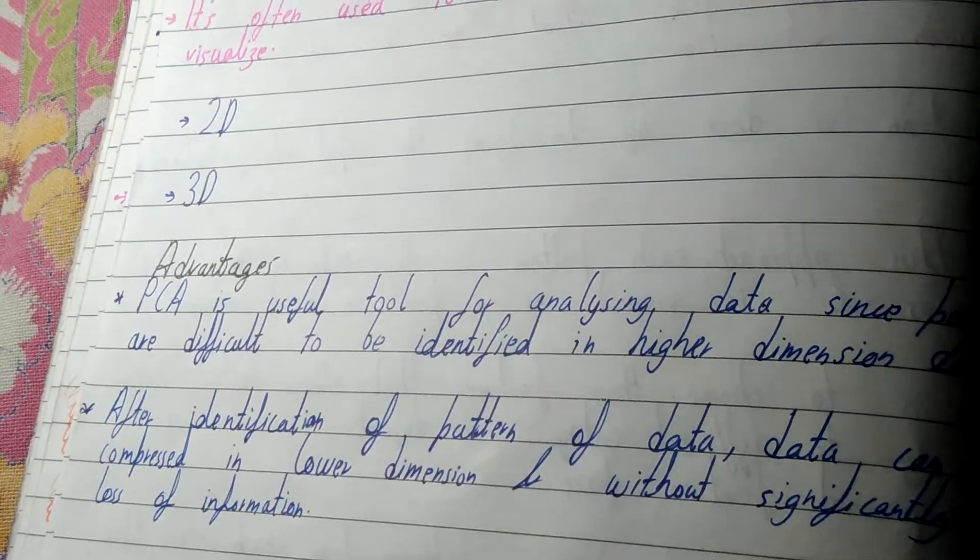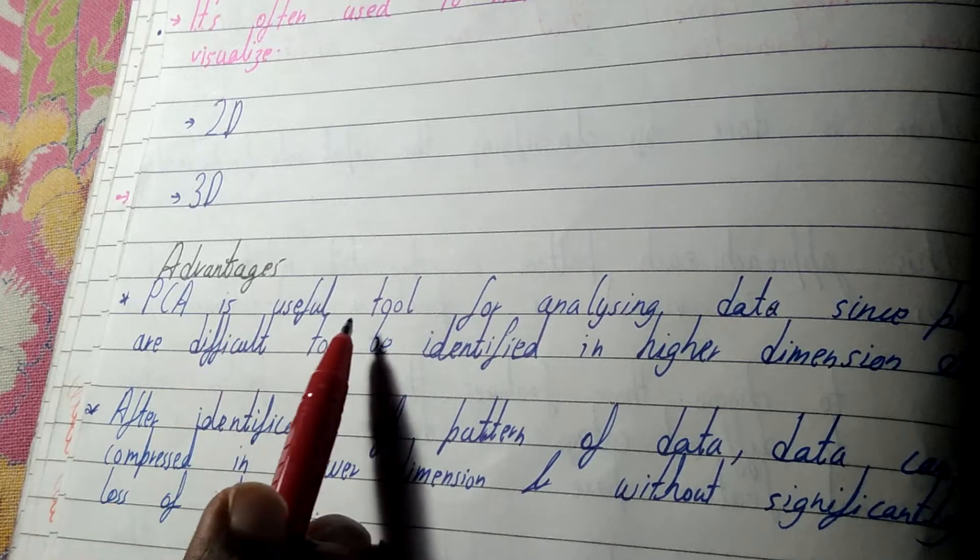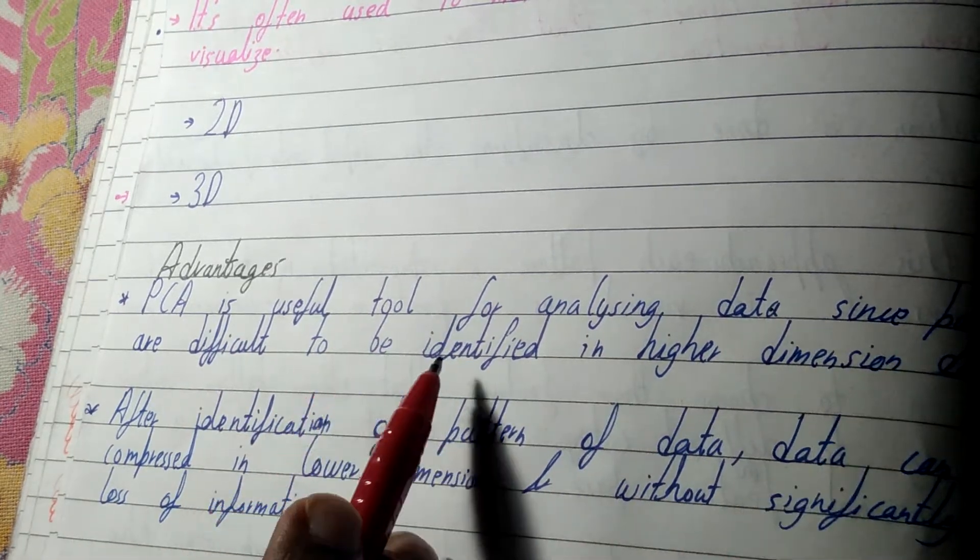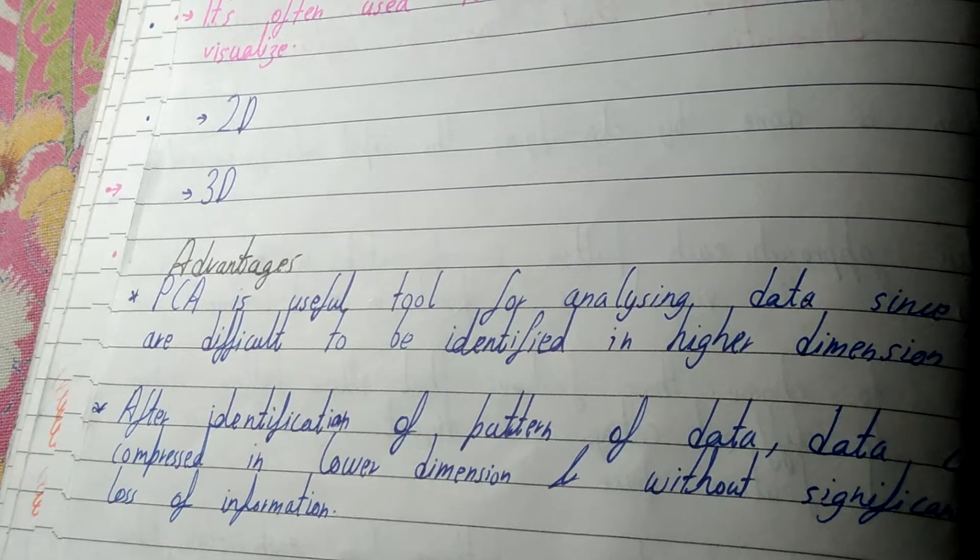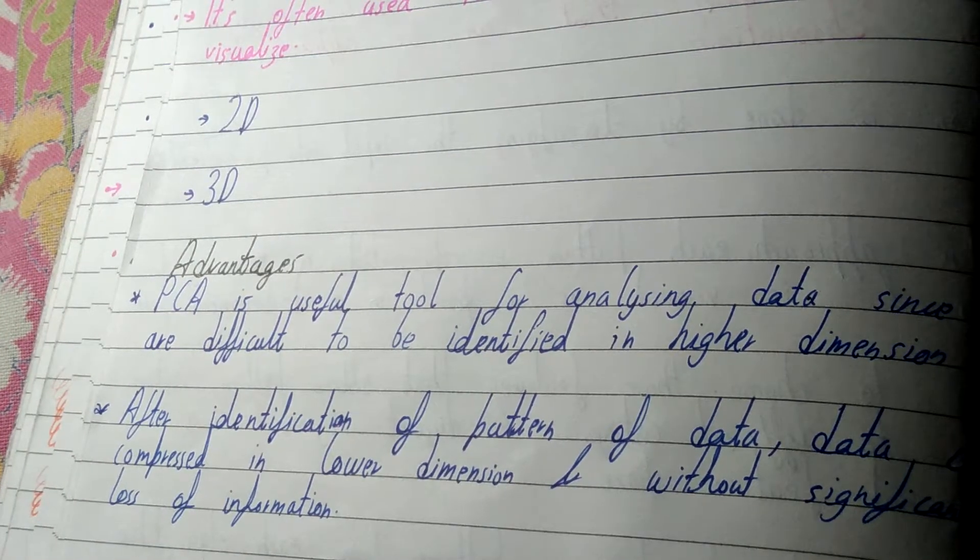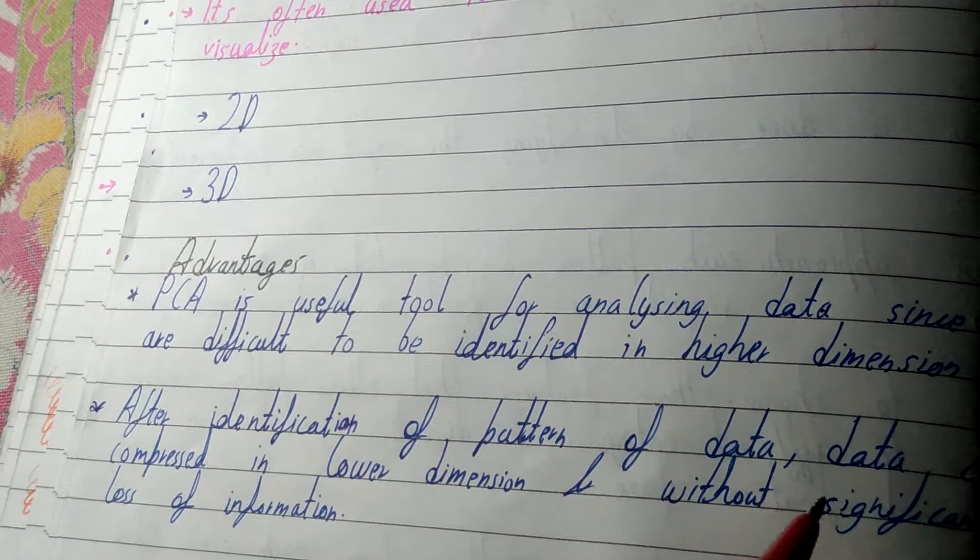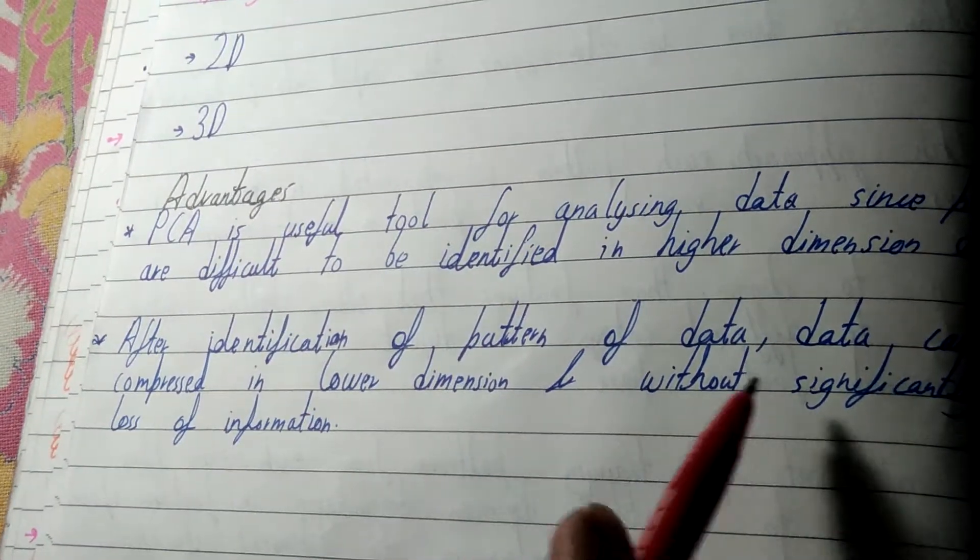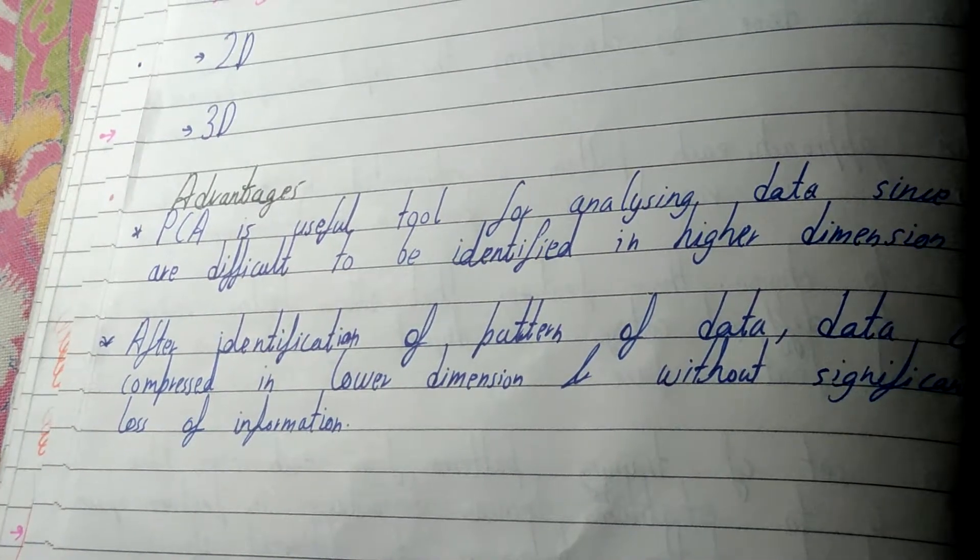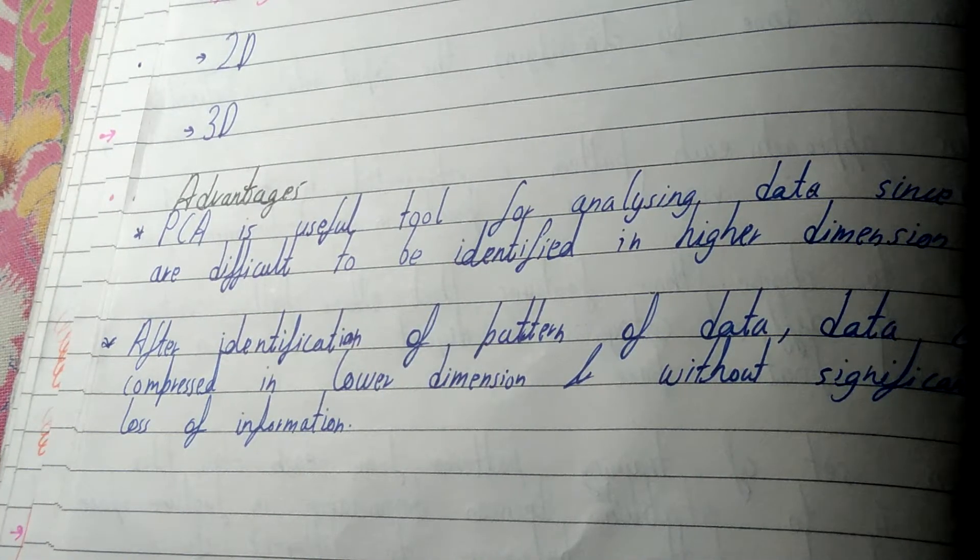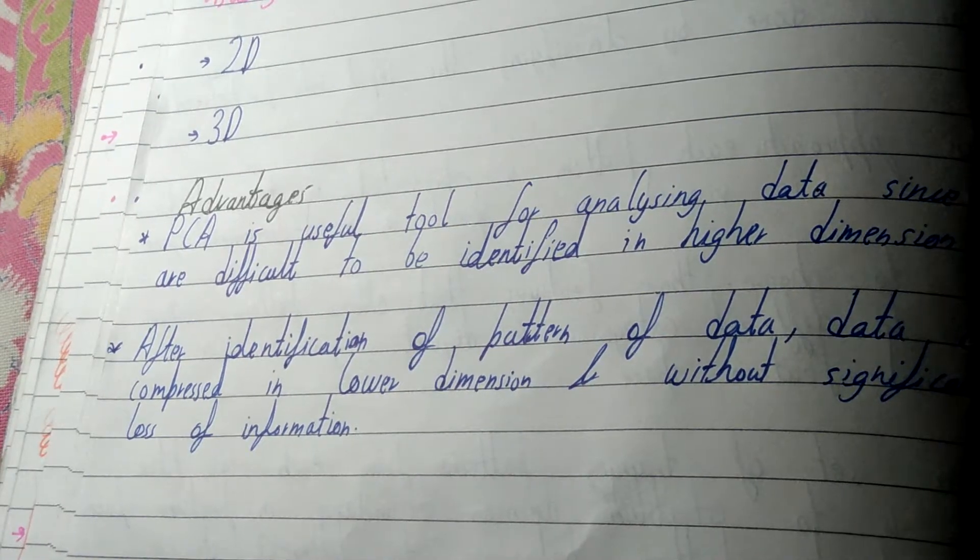So let's come to the advantages. If we talk about the advantages of it, the first main advantage is PCA is a useful tool for analyzing data since patterns are difficult to identify in higher dimensions. So because it is difficult to analyze patterns in higher dimensional space, we use PCA that identifies patterns of data and data can be compressed to lower dimensions without significant loss of information. So with PCA, very less information is lost and data is converted into lower dimensions that can be easily analyzed.